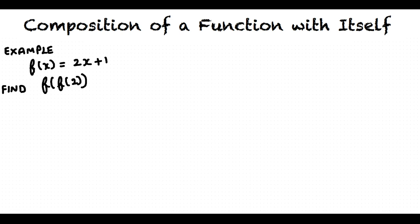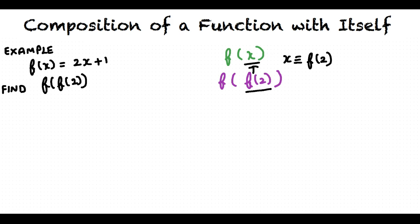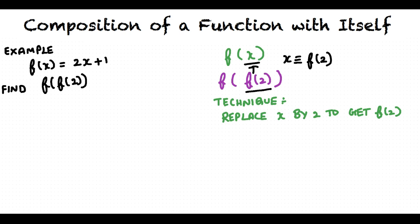Let us take an example. Let's say we have a function f(x) = 2x + 1, and we are required to find f(f(2)). Comparing f(x) and f(f(x)), we can see that we have f(x) in the second expression in place of x in the first expression. Thus, to find f(f(2)), we first replace x by 2 to get f(2), then replace x in the same function by f(2) to get f(f(2)).